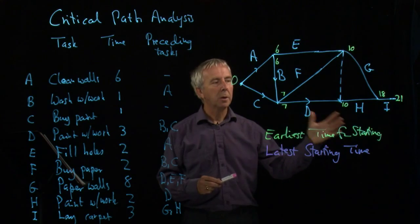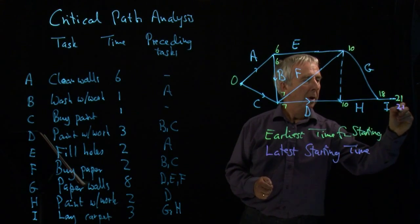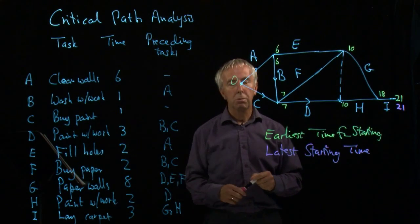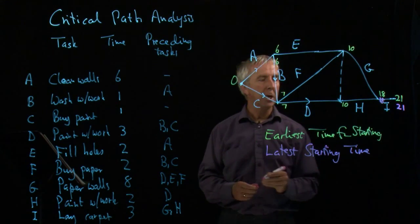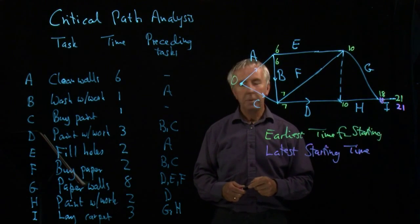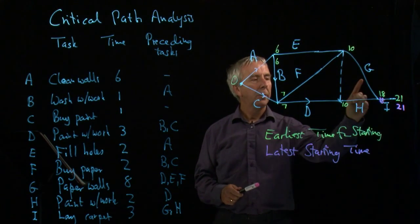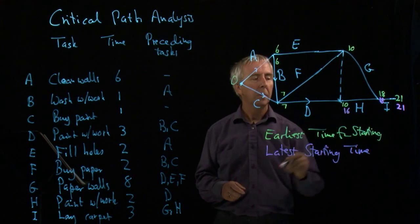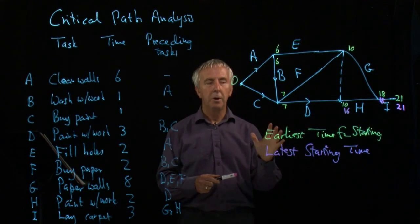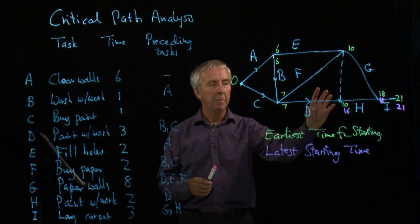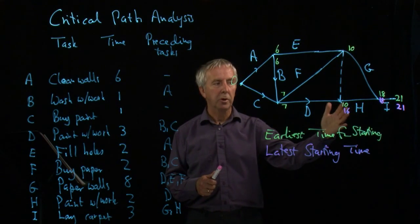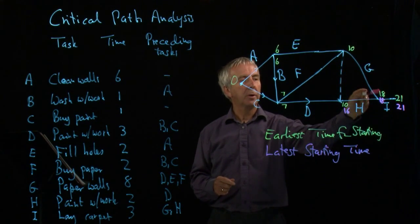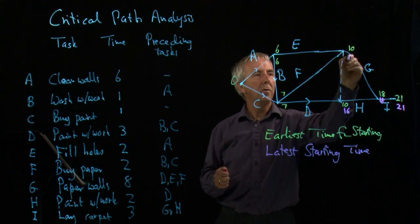So now we start from the end and work backwards, so we do this in pink. So let's suppose I finish after 21 hours. When was the latest that I could start I? Well, I took three hours, so I must have started at 18 hours. What about H? Well, H takes two hours, so in order for H to be ready at 18 hours, it didn't need to start until 16. So its earliest and latest starting times are different. There's six hours slack time. You could start H after 10, or you could wait until 16. It doesn't matter for finishing the project. Whereas G does take eight hours, so in order to be ready here at 18, G must indeed have started at 10. Latest and earliest starting times are the same.